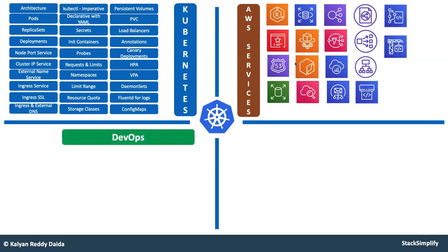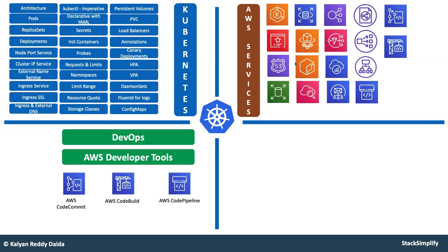Next is DevOps. From a DevOps perspective, using AWS code services we have implemented a DevOps pipeline for both applications and also the Kubernetes manifest. If you make any change to your Kubernetes manifest and check in that code, it will get deployed to your Kubernetes cluster. If you make any changes to your application code, it will build a new Docker image and deploy to the Kubernetes cluster. Both ways the pipeline is built for you.